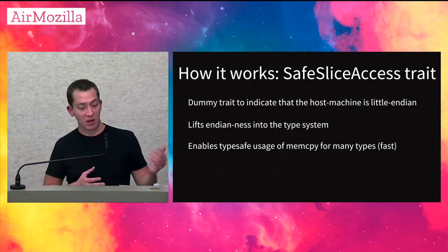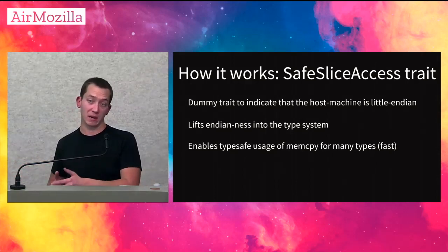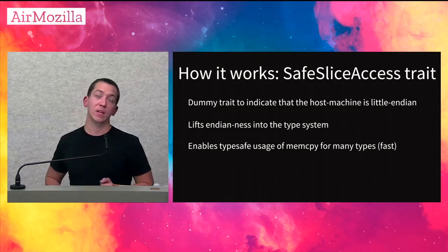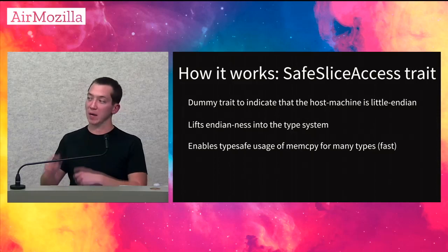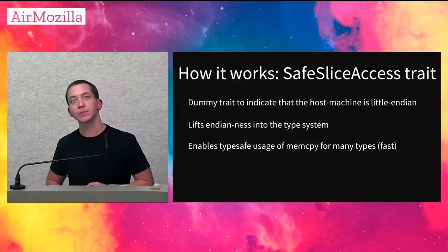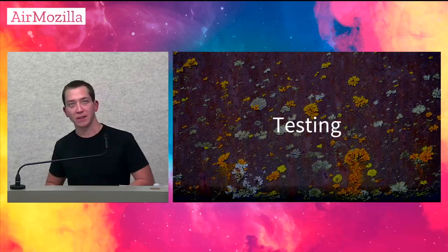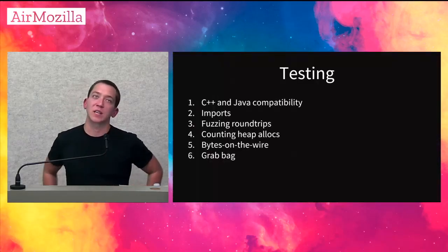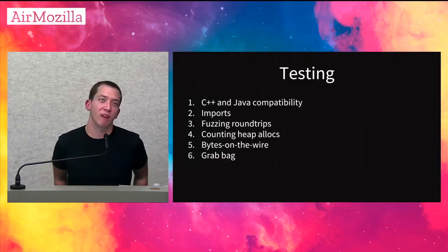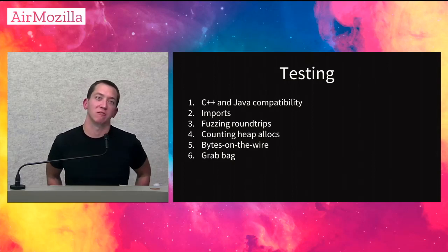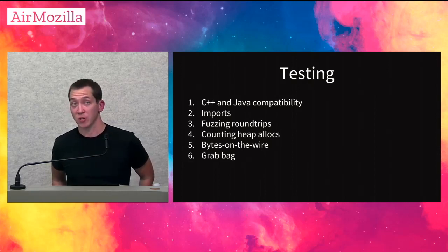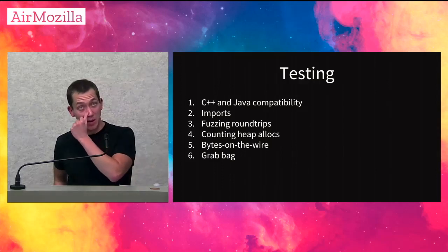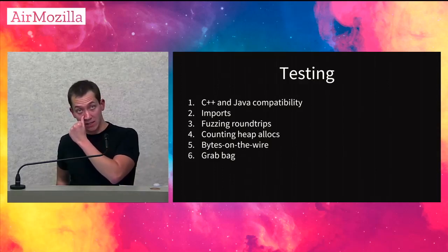The last trait is SafeSliceAccess — a dummy trait that indicates the host machine is little-endian, lifting endianness into the type system. When this type-checks it means it's safe to use memcopy to copy data from a vector of bytes or structs directly into the byte buffer of the builder. It makes the write path much more efficient when it can by using memcopy everywhere possible. On big-endian machines the alternative is to use different operations — writing byte by byte, for example.